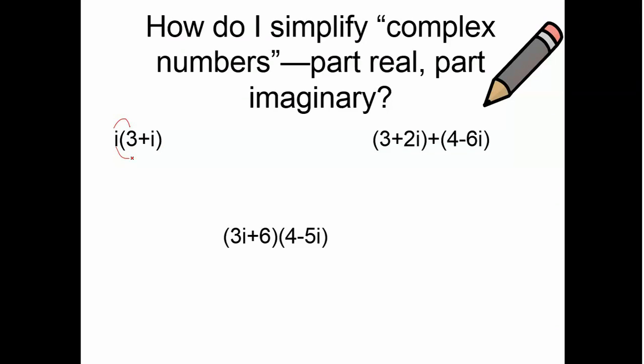So, basically, what you want to do is distribute that i in. So, I'll get 3i here plus i times i, which is i squared. Don't stop. Don't wait, though. Wait, wait, wait.